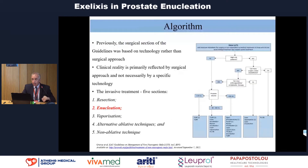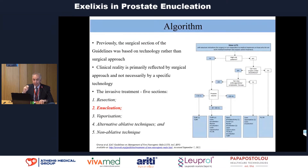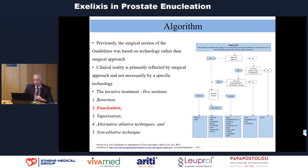If you look at this algorithm developed by the EAU guidelines panel on male LUTS, previously the surgical section of the guidelines was based on technology rather than the surgical approach. But in clinical reality, it is primarily reflected by surgical approach and not necessarily by a specific technology. For this reason, we changed the guidelines. The invasive section now has five subsections: resection, enucleation, vaporization, alternative ablative techniques, and non-ablative techniques.